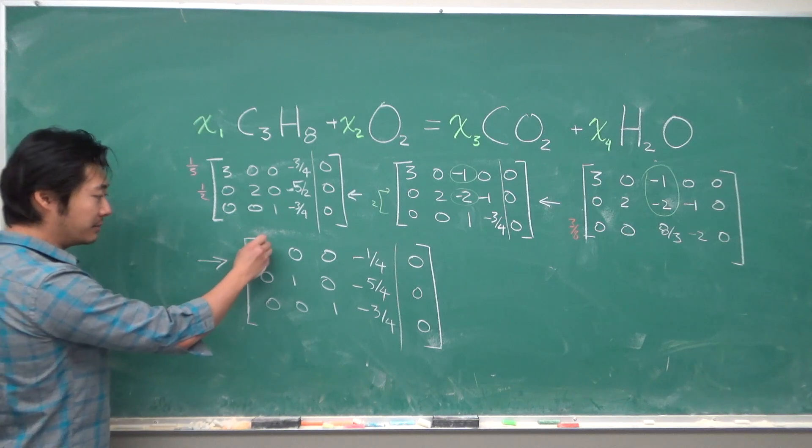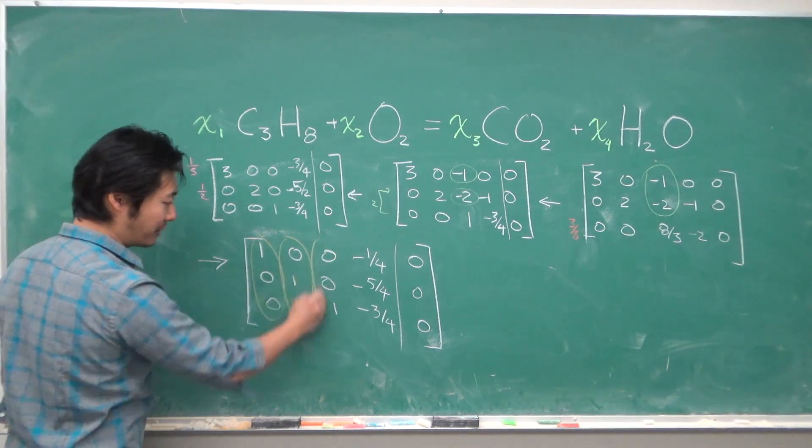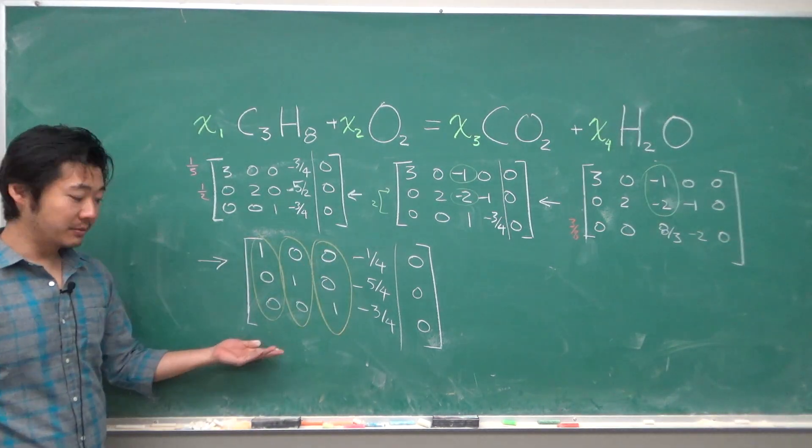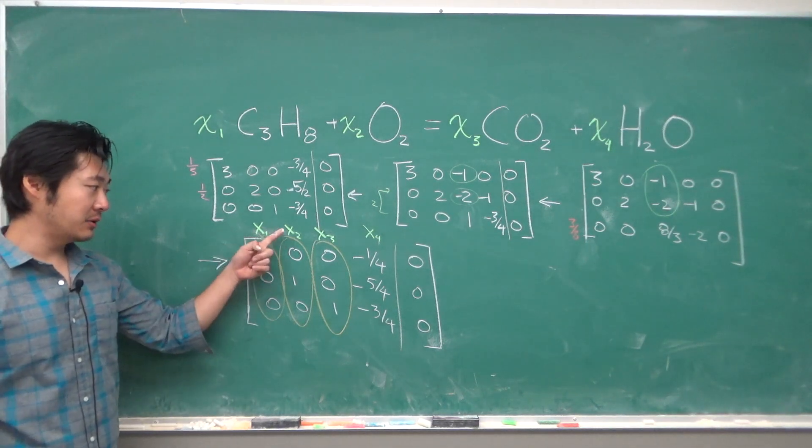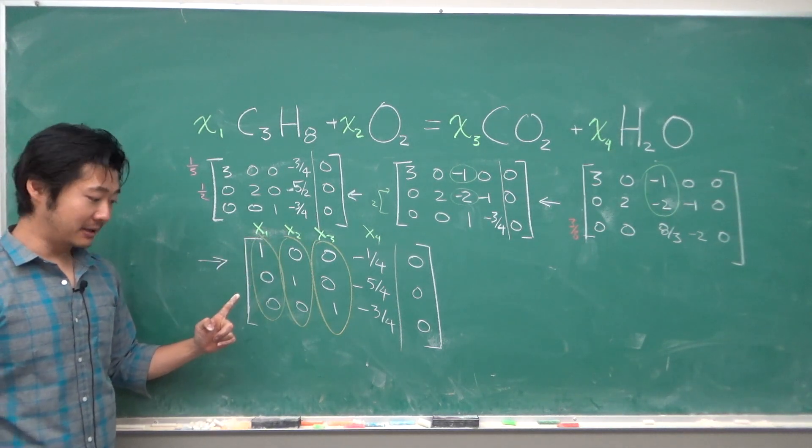And so the pivot columns are the ones with the pivot positions. So these are the pivot columns. They correspond to the basic variables. So x1, x2, x3 are going to be the basic variables. And x4 is your free variable.